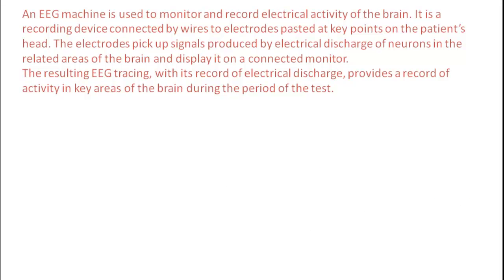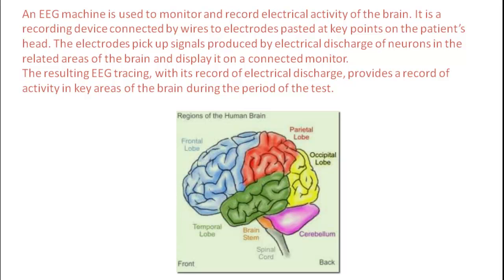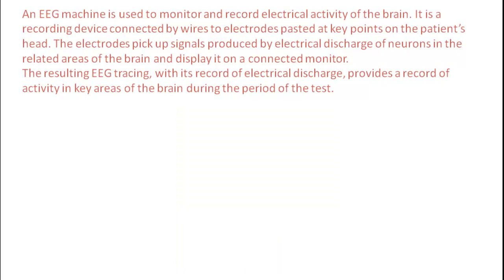The resulting EEG tracing, with its record of electrical discharges, provides a record of activity in key areas of the brain during the period of the test. If we have connected the electrodes to the patient's head, the patient's head is divided into four lobes. Each electrode connected to these lobes will reflect the activity of that lobe, which bears meaning for the doctor, who will know if the patient is normal or abnormal, and if there is an abnormality, in which area of the brain it is generated. The basic principle of the EEG machine is to monitor and record the electrical activity of the brain.